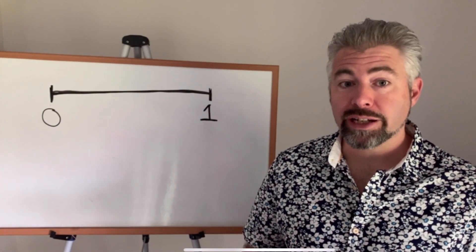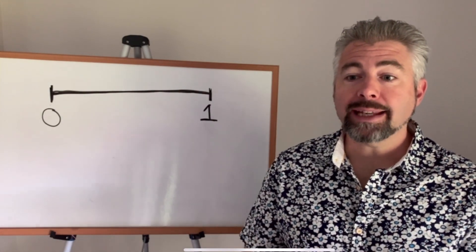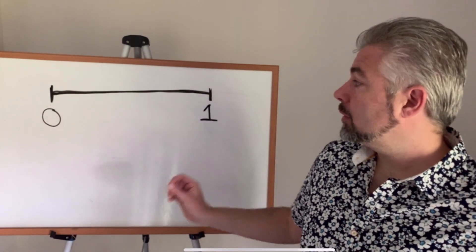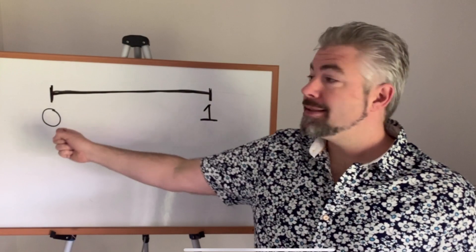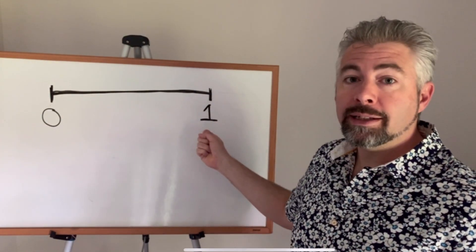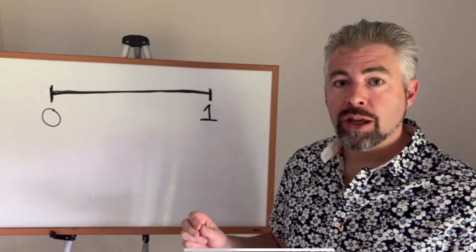Probability is a way to make predictions about the future. It's a way to measure how likely any event is to take place. We measure probability on a scale from zero to one, where zero is impossible, something that will never happen. One is something that will always happen, something that's inevitable.